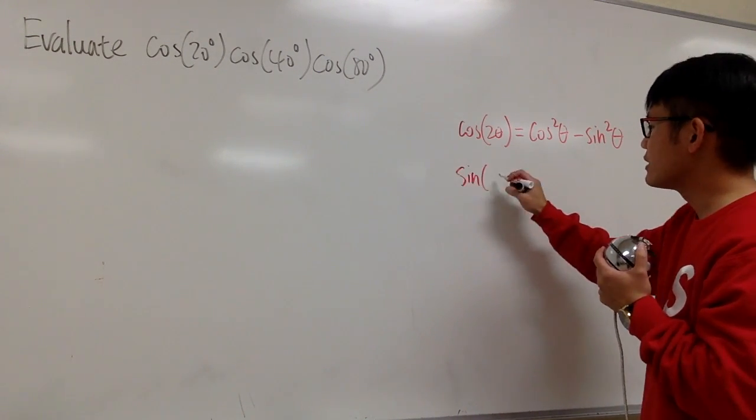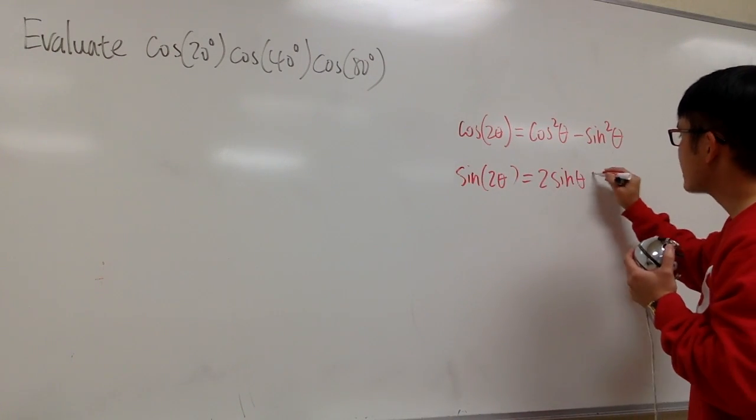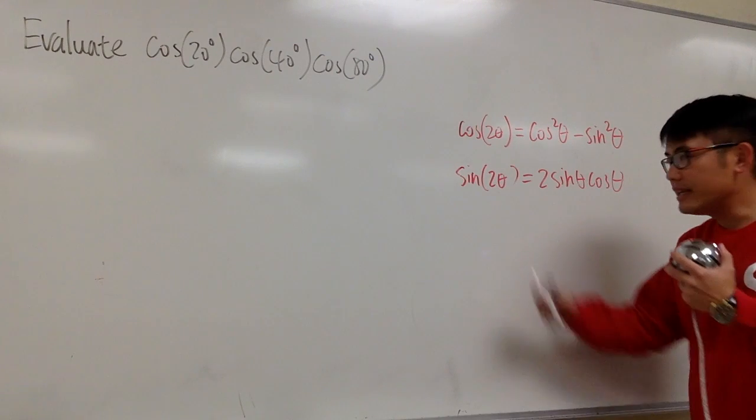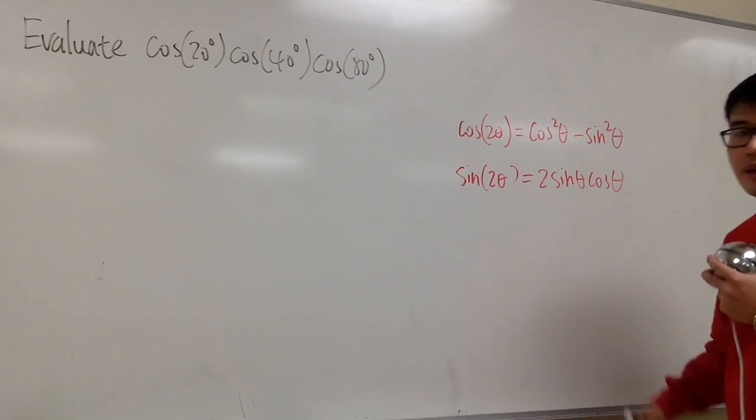But we also have another double angle formula, and that's for sine. Let's look at sine of 2θ, we know this is going to be 2 sine θ times cosine θ. But then in clear, we don't care about sine, right? We care about cosine.